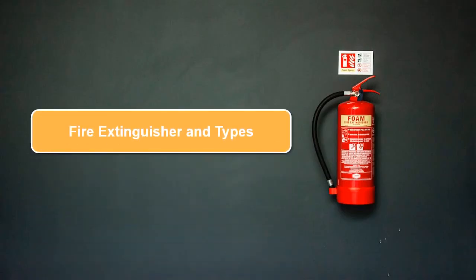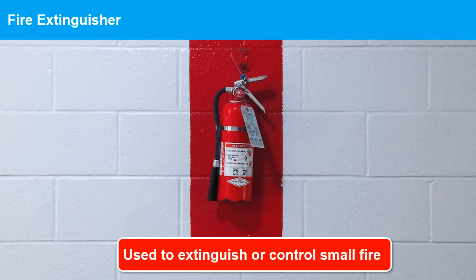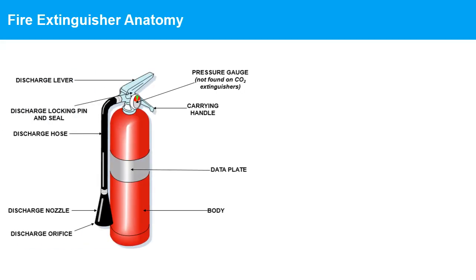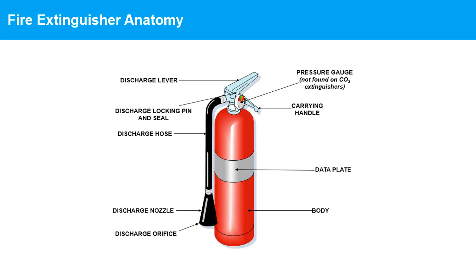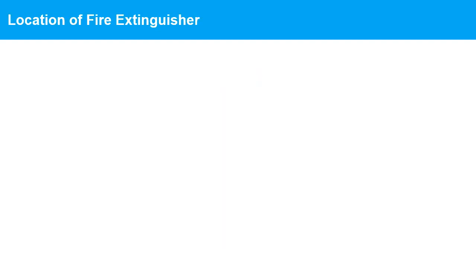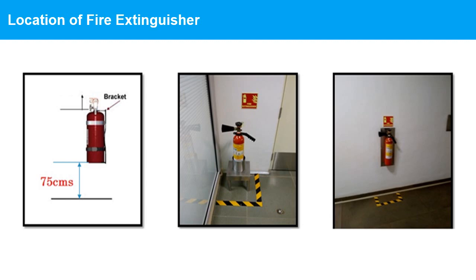What is a fire extinguisher? A fire extinguisher is a device used to control small fires by dispensing substances designed to extinguish flames. They are essential safety tools in homes, businesses, and public buildings. A typical fire extinguisher consists of: a cylinder, pressure gauge, valve, handle or lever, nozzle or hose, safety pin, and extinguishing agent. As per the Indian government's General Fire Regulations (GFR) of 1985, fire extinguishers should be installed at specific locations within a building to ensure they are readily available in the event of a fire.